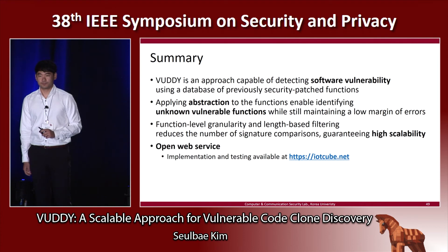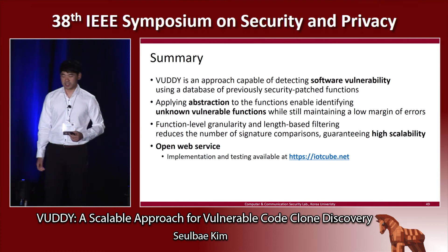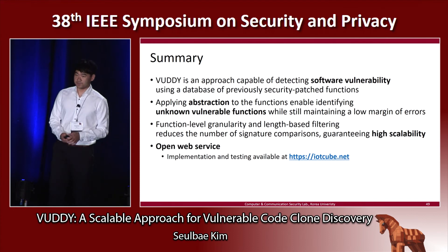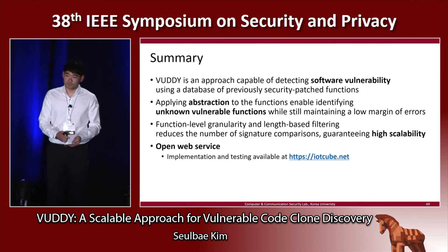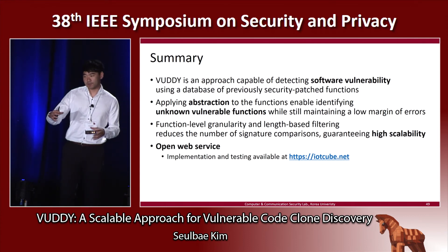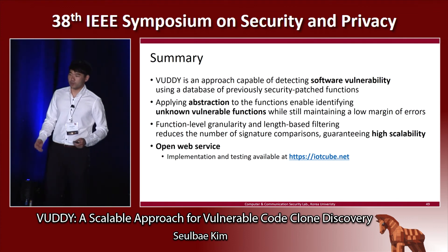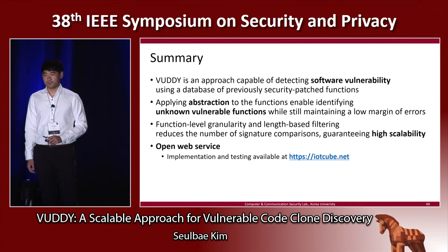Q: What would you say is the main reason for the low false positive rate? A: That's because we're using function-level granularity. A function conveys both syntactic and semantic information, and it's designed to serve a certain purpose. So I think that's why we have a low false positive rate.